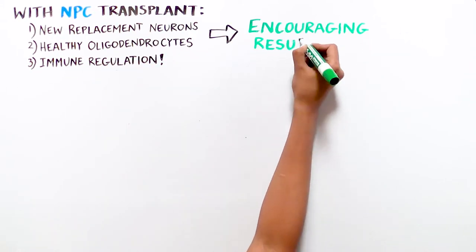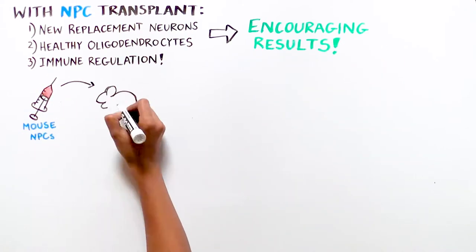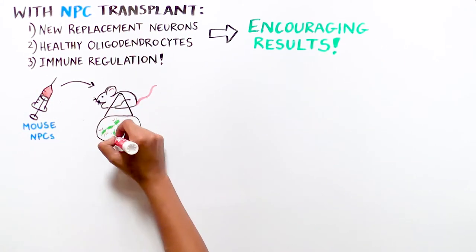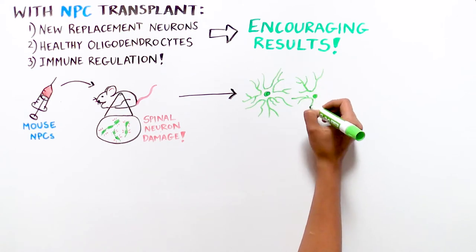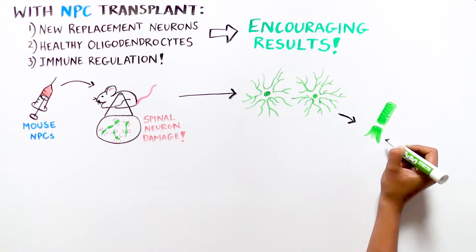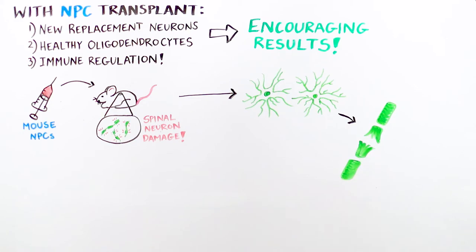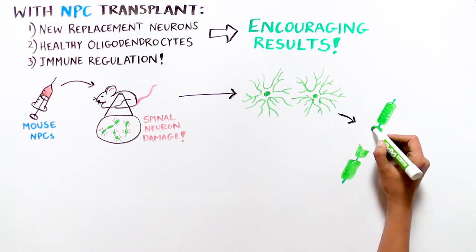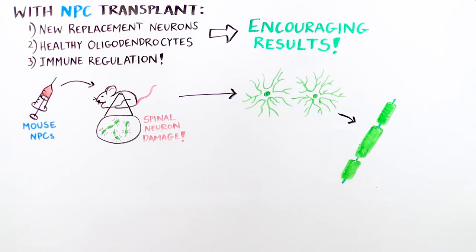Amazingly, these treatments work. Mouse NPCs transplanted into mice that had damaged neurons in their spinal cords could become oligodendrocytes, leading to increased production of myelin around the axons of neurons. And the researchers also found that damaged neurons were replaced with healthy ones.